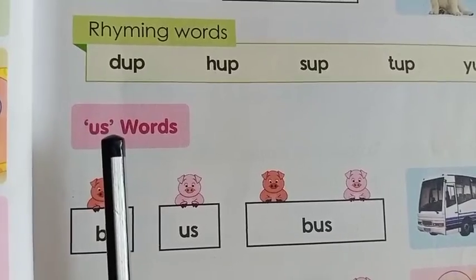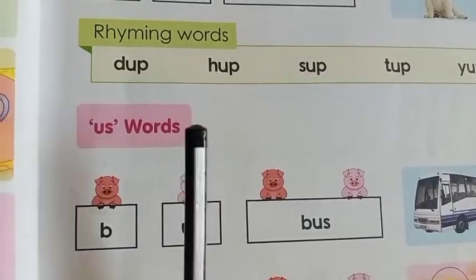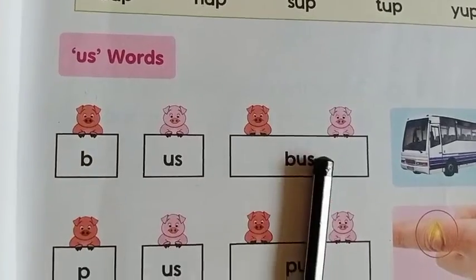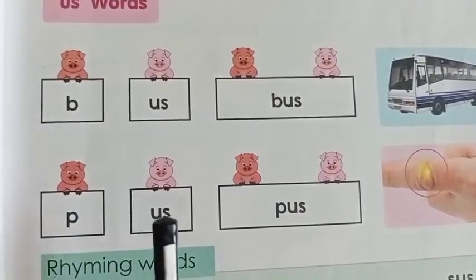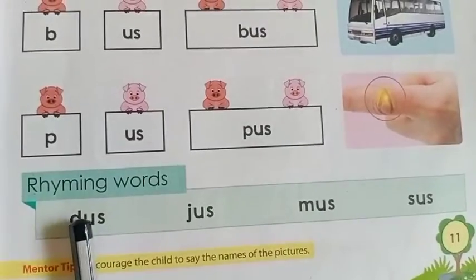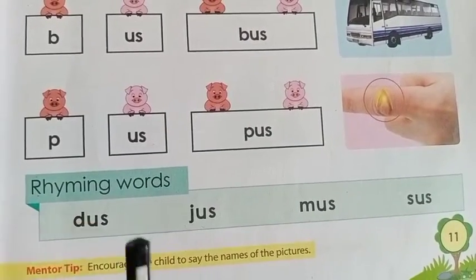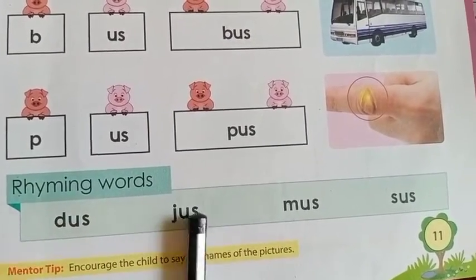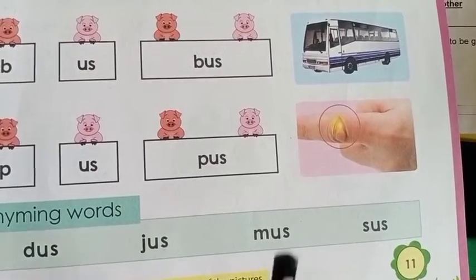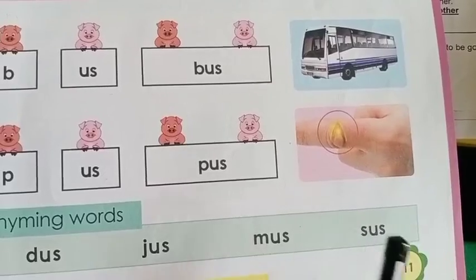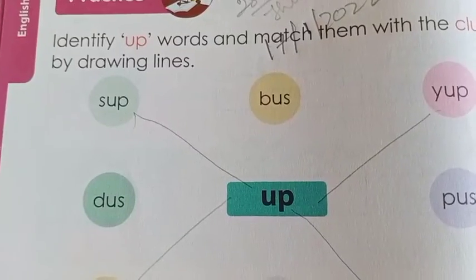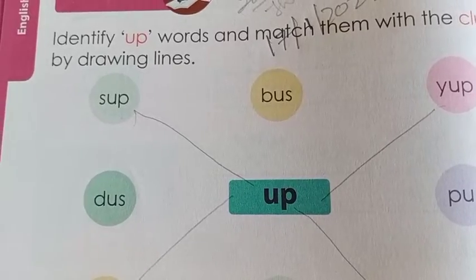U-S: us. US words. B-B: us — bus. P-P: us — pus. D-D: us — dus. J-J: us — jas. M: us — mus. S: us — sus. Now come to page number 12.